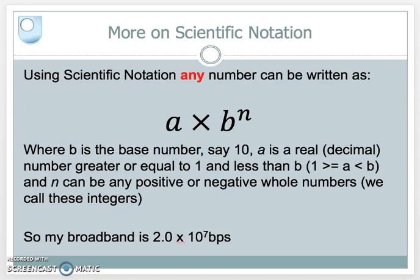Also as technologists, in our numbers, very often we just want to convey magnitude. We don't always want to convey preciseness. So if I say my broadband speed is 2.0 times 10 to the power of 7 bits per second, that's not an accurate figure. I'm not going to get that all the time. But for calculations and general discussion, that number is good enough.